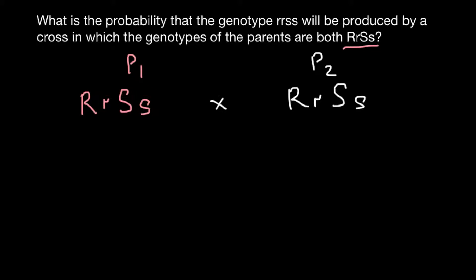This is the sign of crossing. And we are looking for the genotype in the progeny that is going to be small r, small r, and small s, small s. So the progeny should get each allele from each parent — one small r allele from one parent, another small r allele from the second parent, and this small s allele from one parent, and the small s allele from the other parent.